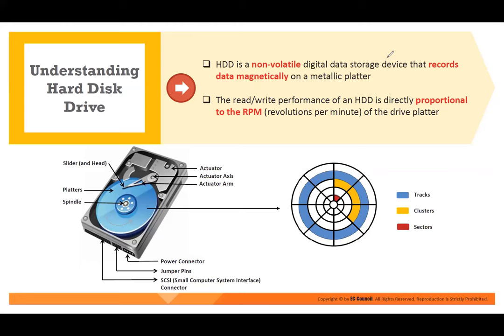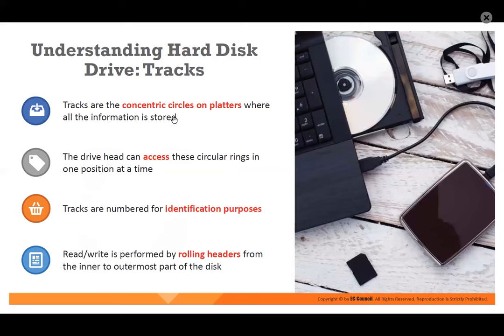You are now able to write the anatomy of your hard disk. You have actuator arms moving the head, which is the one doing the reading. So it has got tracks — circles on the platter where all the information is stored. The driver can access one circle ring position at a time. Tracks are numbered for identification purposes. Reading is performed by moving the head from the inner to the outermost part of the disc.